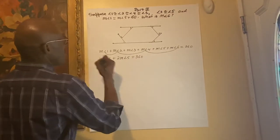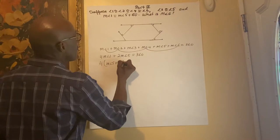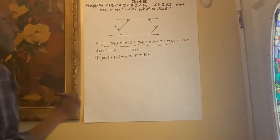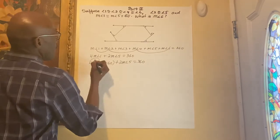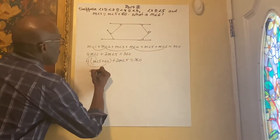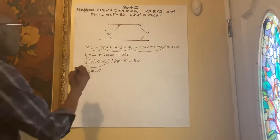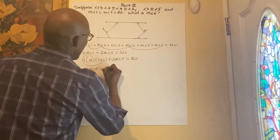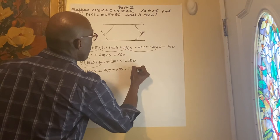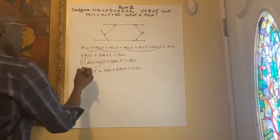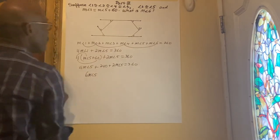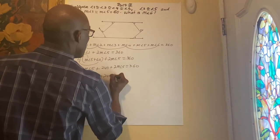4 times the factor of (measure angle 5 plus 60) plus 2 measure angle 5 equals 360. Now multiply 4 by measure angle 5 and 4 by 60: 4 times measure angle 5 plus 4 times 60, that gives you 240, plus 2 measure angle 5 equals 360. Combining like terms: 4 measure angle 5 plus 2 measure angle 5 gives you 6 measure angle 5 plus 240 equals 360.